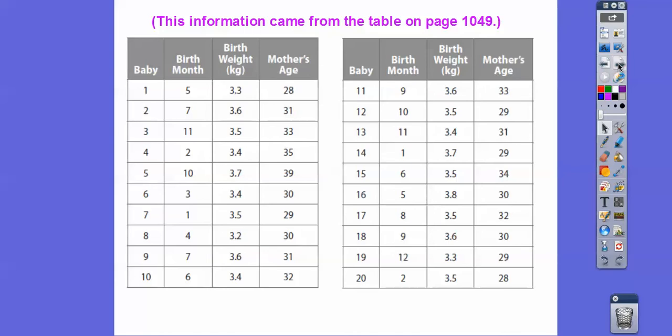But that's all that is, is that. So here was the birth months that we wrote down, the birth weights, and then the mother's age. And so there was 20 of them. Here's babies 1 through 10, 11 through 20.